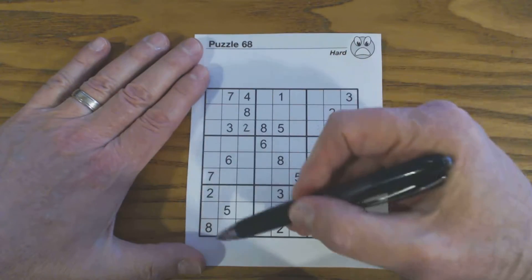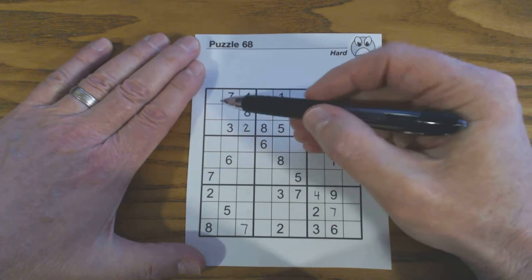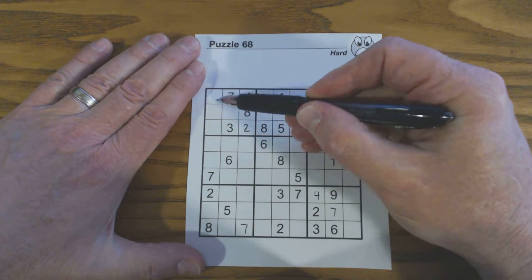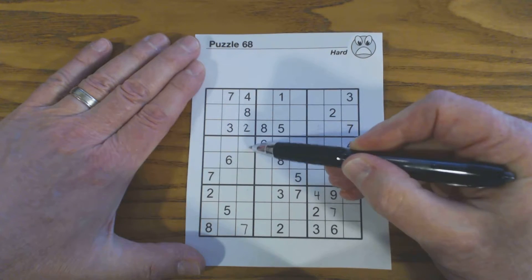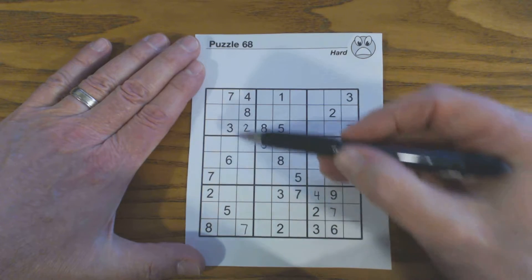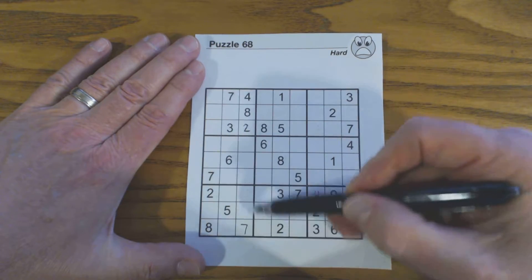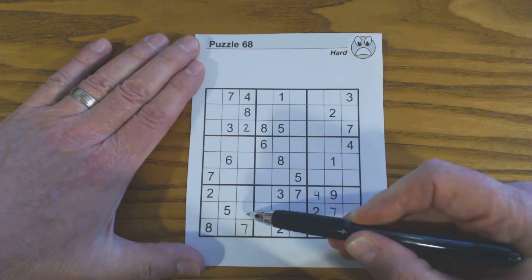Now let's look at this section here with these ghost numbers. Because of these ghost fives here, the only place a five can fit in this square is right here or right here. The only place a six can fit in this square, because of these ghost sixes here, is right here or right here.